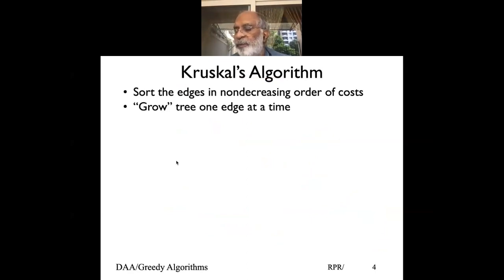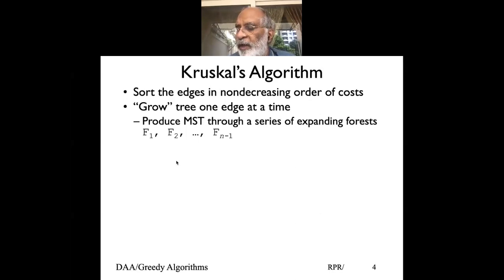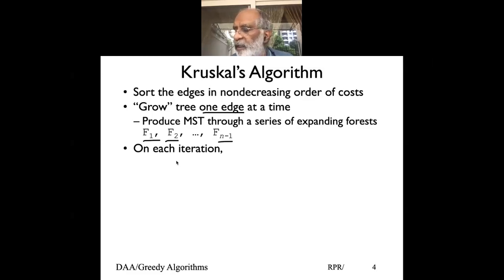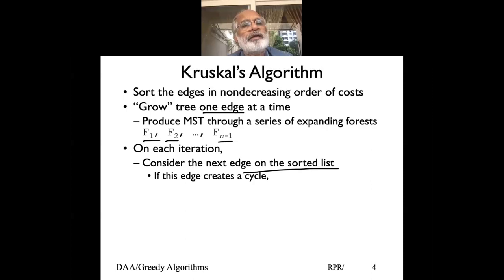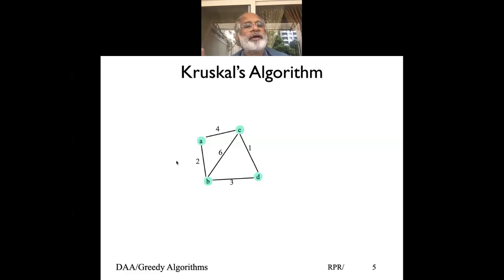What do we primarily do? First, make sure we sort the edges in non-decreasing order — that means smallest cost first, then the next smallest cost. The difference between non-decreasing and increasing is such that with non-decreasing, the next edge could be the same cost or could be more. Then we basically grow one edge at a time and get a number of forests. Join the forests to make one connected component. Each time we pick an edge from the sorted list — lowest cost edge — if it creates a cycle, discard the edge; if it doesn't create a cycle, add the edge. The two forests F1 and Fk become a single forest, and the process continues until you get n-1 edges.